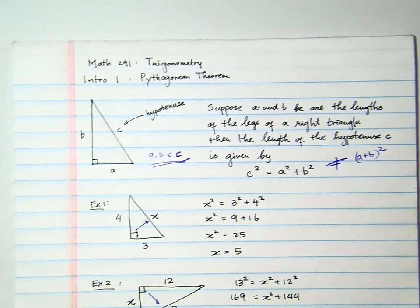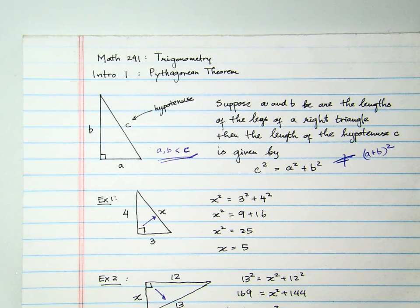This is again 200 level class and I expect you to be able to have a systematic way to set up and to solve math problems. That's for Math 241 Trigonometry class, the first introduction on Pythagorean theorem.